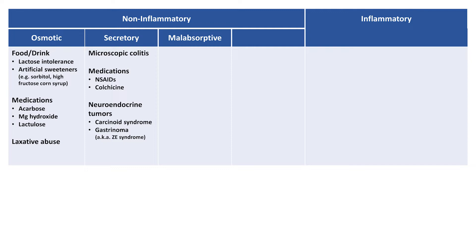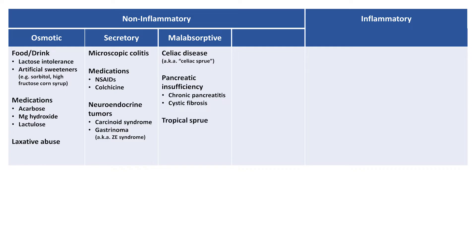In malabsorptive diarrhea, stools can be, but are not always, greasy and unusually foul-smelling. Notable etiologies include celiac disease, also known as celiac sprue. Other etiologies here include pancreatic insufficiency, in which the pancreas does not produce its normal alkaline, enzyme-rich pancreatic fluid to aid in digestion, as can be seen in chronic pancreatitis and cystic fibrosis. Tropical sprue is a chronic diarrheal illness seen predominantly in the tropics; its pathogenesis is unknown but widely speculated to be infectious in origin. Olmesartan is an angiotensin receptor blocker used for hypertension and is one of the few medications that can cause a malabsorptive diarrhea with a similar presentation to celiac disease, a condition termed drug-induced enteropathy.